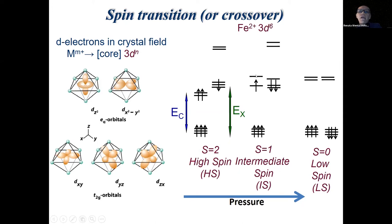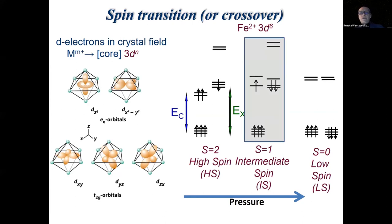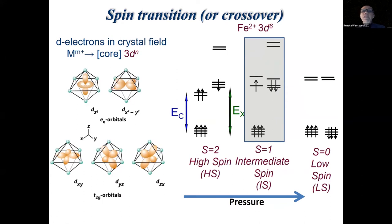With increasing pressure, oxygens get closer to iron, the crystal field splitting increases, while the exchange energy splitting does not change very much. So you end up with spin-down T2G electrons falling below the EG spin-up electrons, and electrons start moving into the spin-down states — producing an intermediate configuration with S=1. At the highest pressures, only the T2G orbitals are filled, giving the lowest spin state with S=0. The intermediate spin state has very high energy and is not likely to exist. The transition observed experimentally is from high spin (S=2) to low spin (S=0) in ferrous iron.